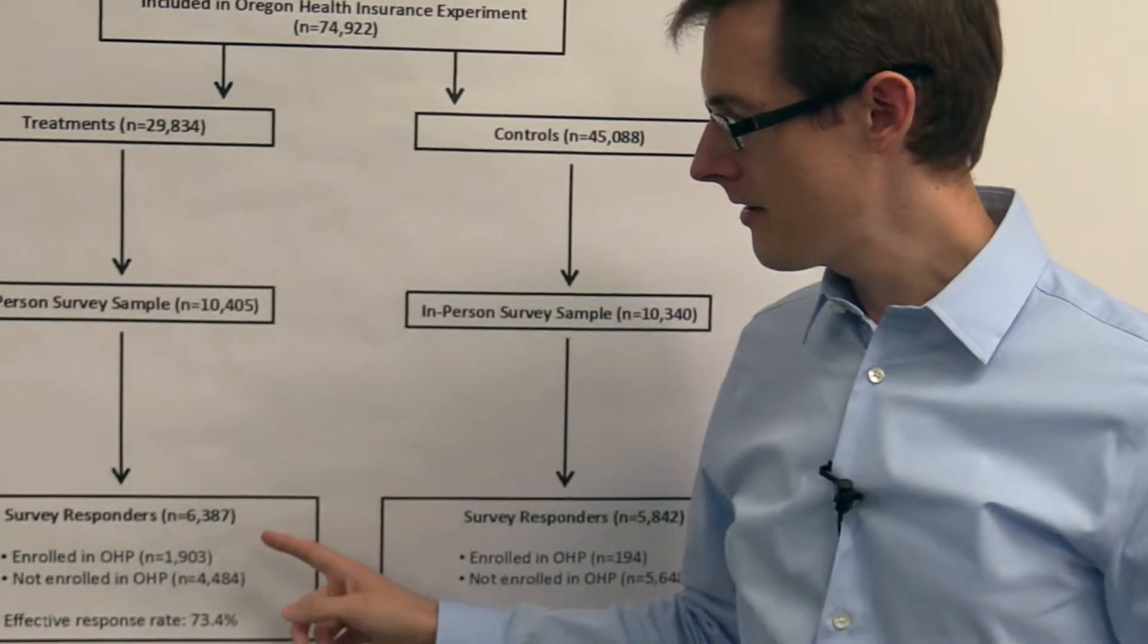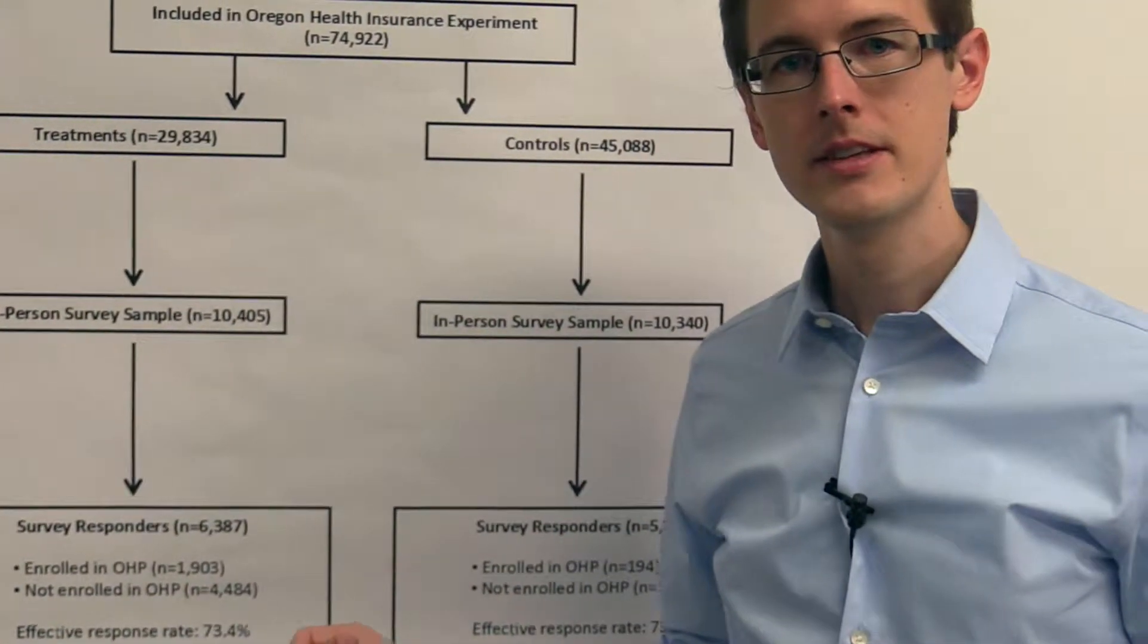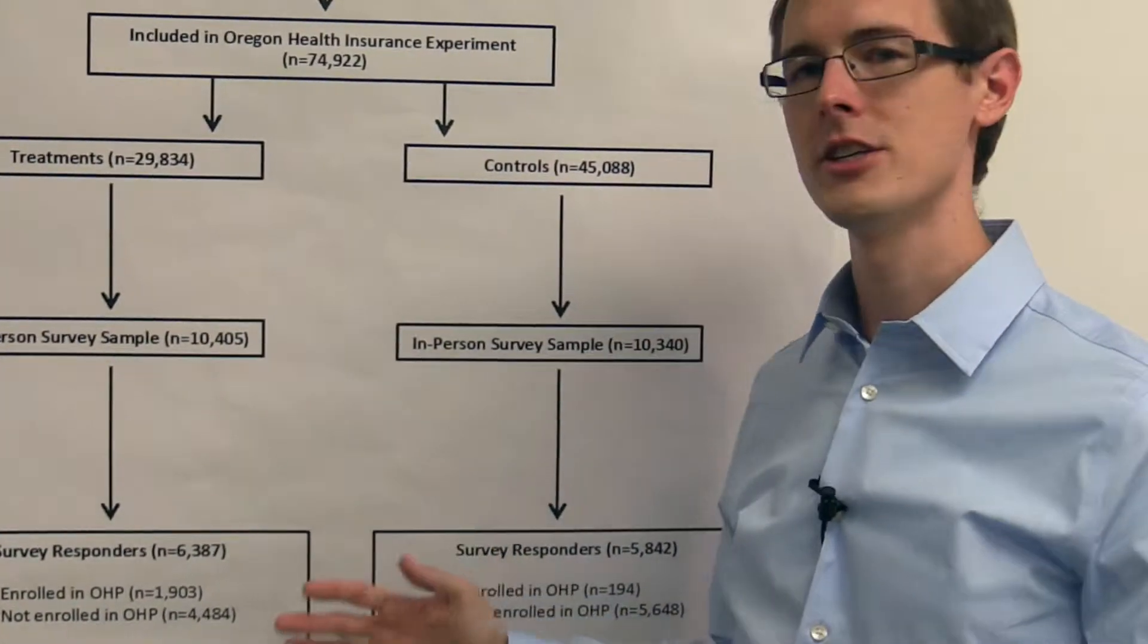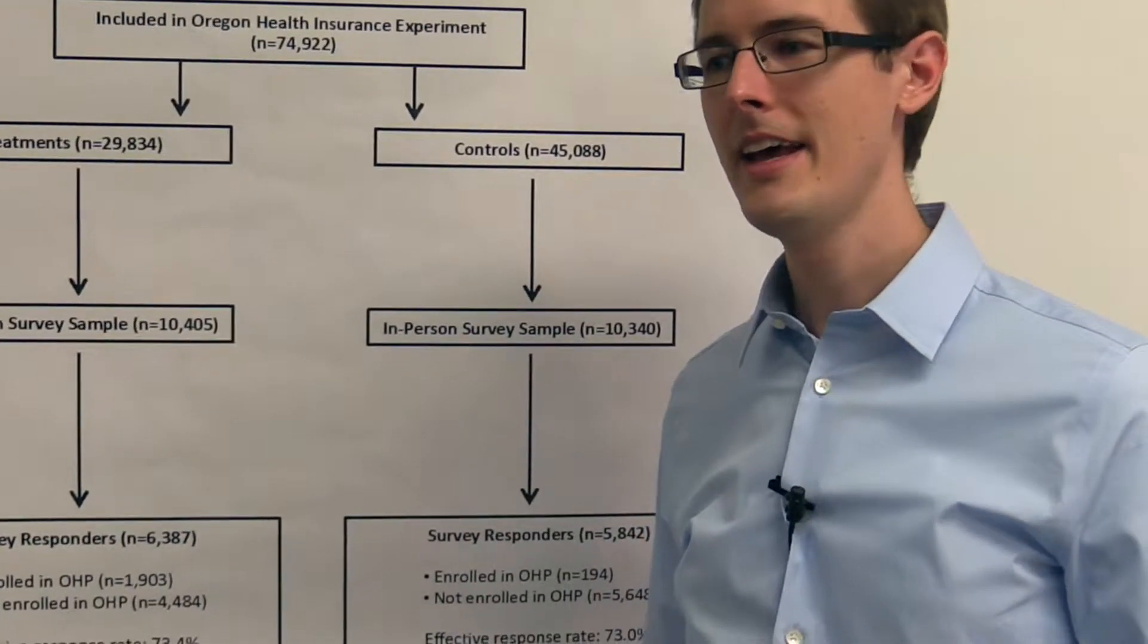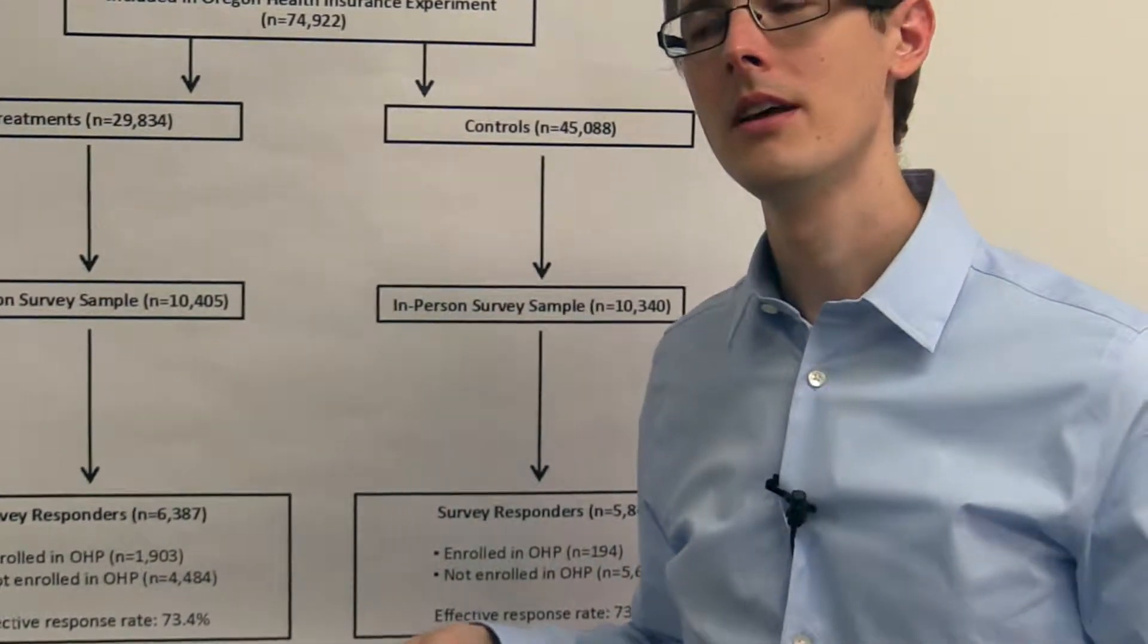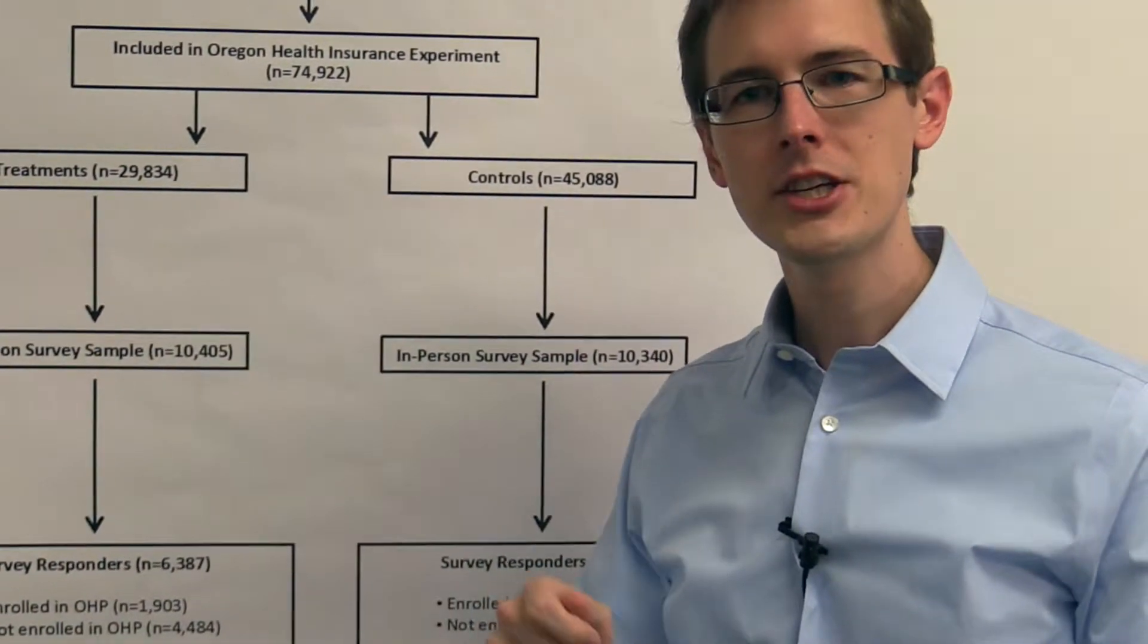But then, the people who did respond, suppose that they're the ones who Medicaid did not help. And they've had a year of insurance, and just their health is really bad, and they're just not doing well, and the survey shows up in the mail.